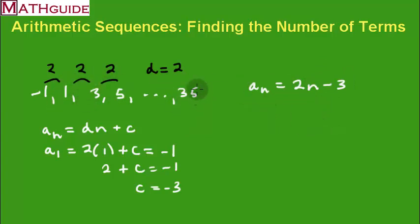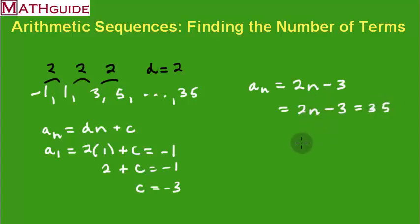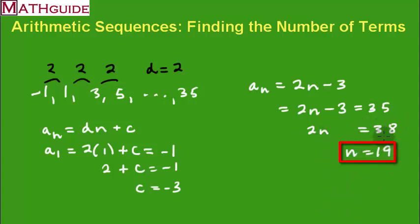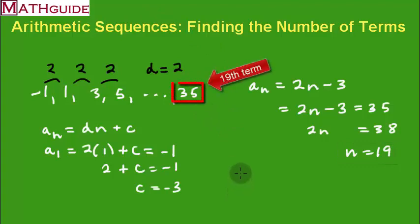Now we want to figure out what term number 35 is. We set the function equal to 35: 2n − 3 = 35. Adding three to both sides gives 38, then dividing both sides by two gives n = 19. So 35 is the 19th term in this arithmetic sequence.